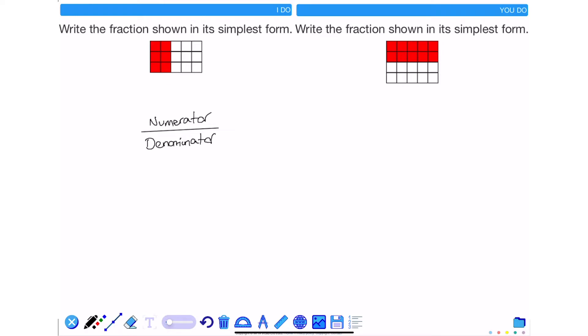The numerator tells me how many parts of the denominator are shaded or used. The denominator tells me the total number of equal parts a whole has been divided into.